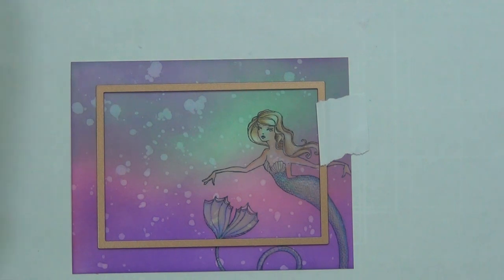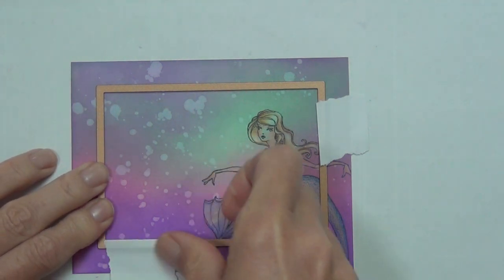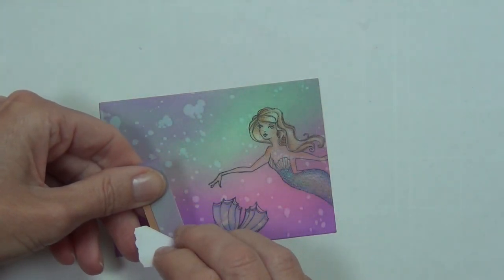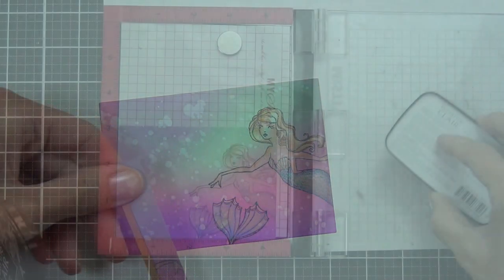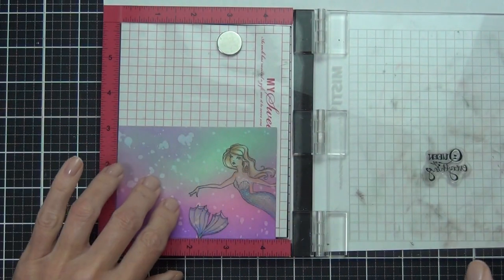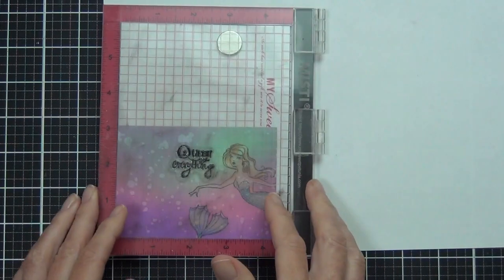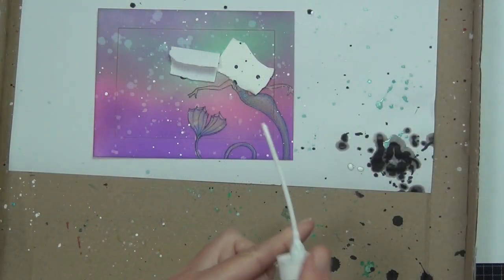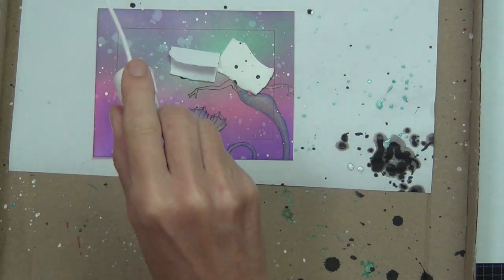I'm using one of my hem stitch rectangles to die-cut a rectangle around and through the girl. I'm going to be using both of these pieces on my card front and just pop up the center on some foam.